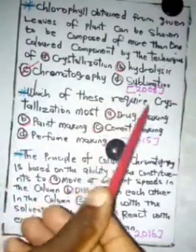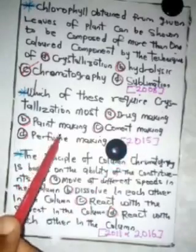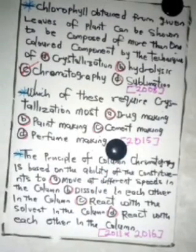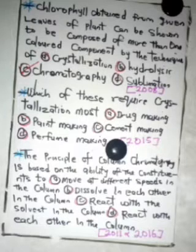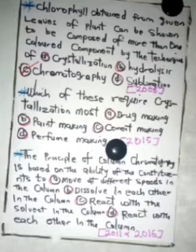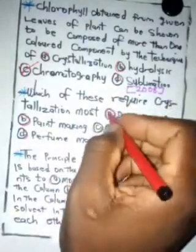The next question: which of these requires crystallization — paint making, drug making, cement making, or perfume making? The answer is drug making, because crystallization is used in the pharmaceutical industry to prepare drugs that are free of impurities.